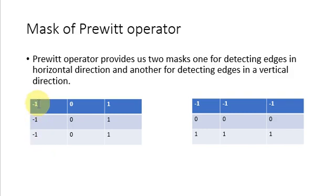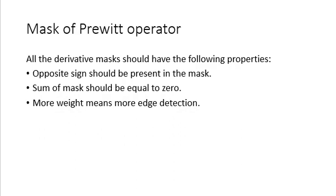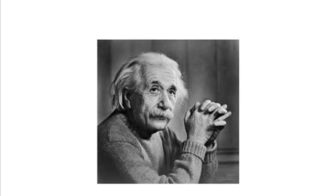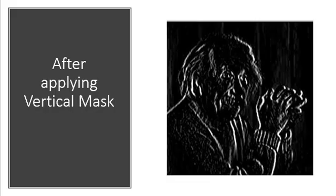Here is a simple picture on which we will apply the above two masks one at a time. After applying the vertical mask, the vertical edges become visible. Now applying the horizontal mask on the same simple image, the horizontal edges are obtained. As you can see, in the first result the vertical edges are more visible than in the original image. Similarly, after applying the horizontal mask, all the horizontal edges are visible. In this way we can detect both horizontal and vertical edges from an image.